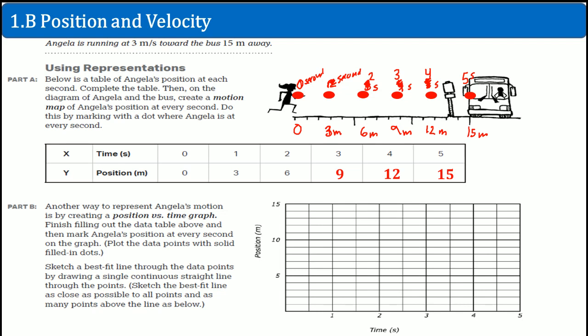So here, now you want to plot this. I decided to plot it for you. This is at your 0, 0. It's right here. This is your 1, 3. This is your 2, 6. This is your 3, 9. This is your 4, 12. And this is your 5, 15.